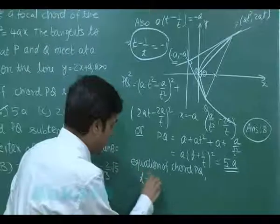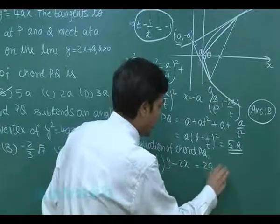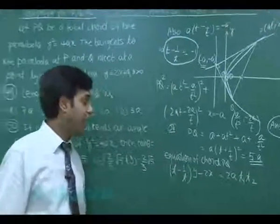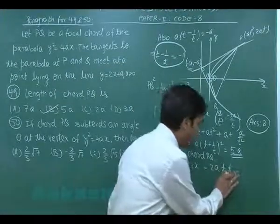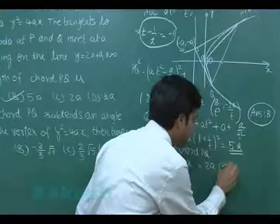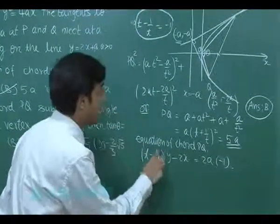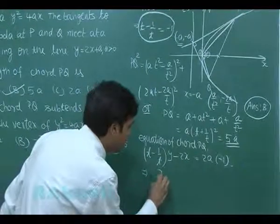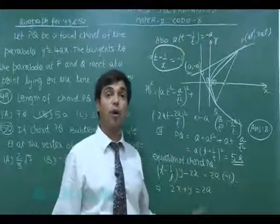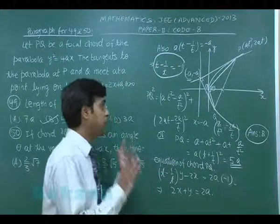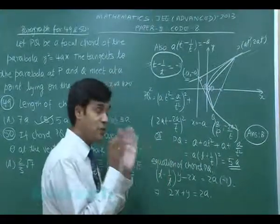The equation of chord PQ can be written using t₁ - 1/t as the slope term. Since t - 1/t = -1 and t₁t₂ = -1, substituting gives us: 2x + y = 2a as the equation of chord PQ.